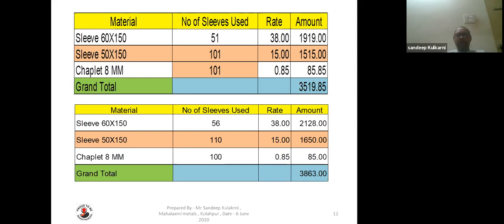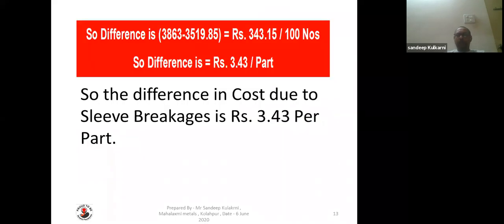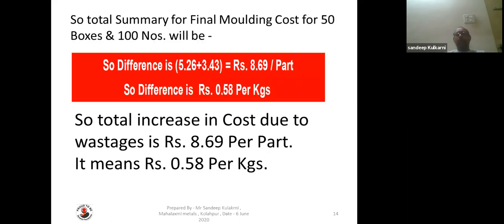As per reality, 60x150 sleeves required are 56 numbers because six sleeves got broken. 50x150 blind sleeves: 110 numbers because 10 sleeves got rejected. 8mm chaplets: 100 numbers — no additional vestiges here. The cost before was 3,519 rupees 85 paisa, whereas the cost afterward comes to 3,863 rupees. The difference in cost is 343 rupees 15 paisa for 100 numbers — that is 3 rupees 43 paisa per part due to sleeve breakage. Total molding cost difference for 50 boxes, 100 numbers: 5.26 plus 3.43 equals 8 rupees 69 paisa per part.